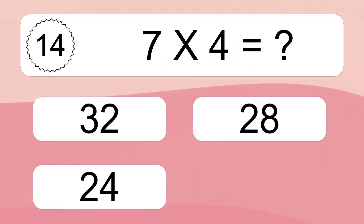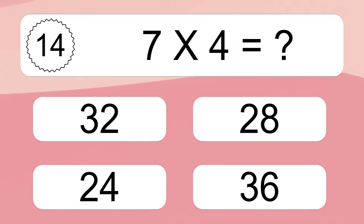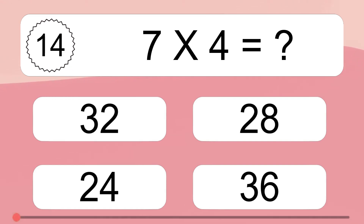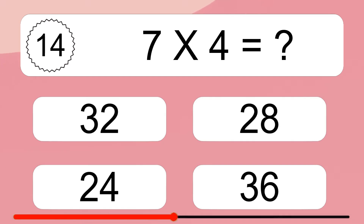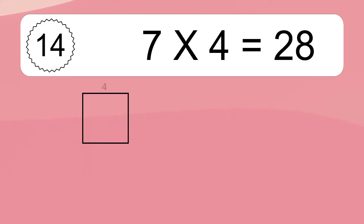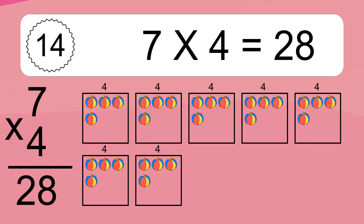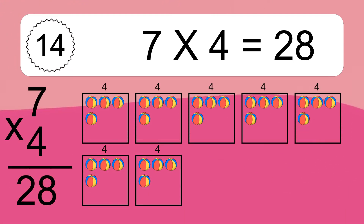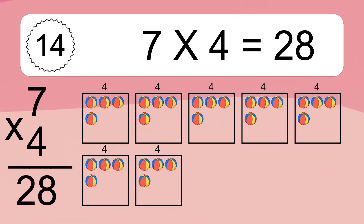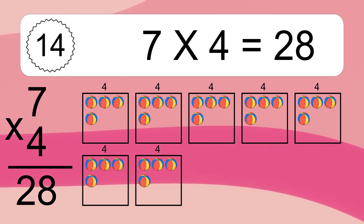7 times 4 equals what? 7 times 4 equals 28. We have 7 boxes and each box has 4 colorful balls inside. If you count all the balls in all the boxes together, you will have 7 times 4 balls. This equals 28 balls.